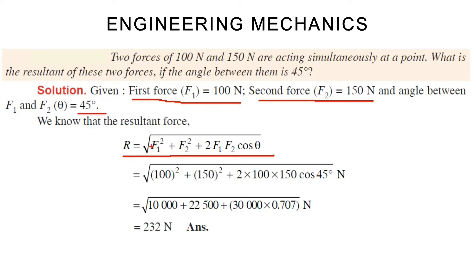We can substitute all the values. F1 is equal to 100, F2 is equal to 150, and theta is equal to 45 degrees. So, root of 100 squared plus 150 squared plus 2 into 100 into 150 into cos 45 degrees. Solving the equation, we get 232 newton.